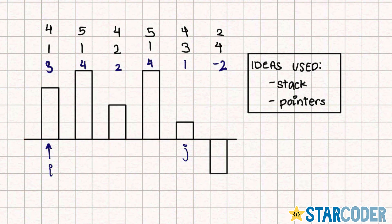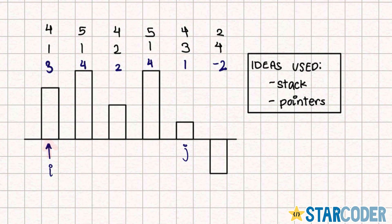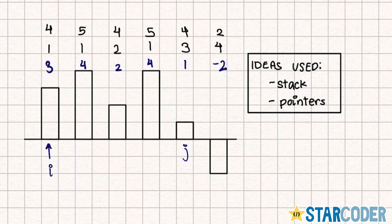Once we've done this, we can use a pointer technique. We assign our starting value i, and after testing a couple of cases — this is one of the most important parts — we can reach an optimal solution by making sure that once we increase something, we don't decrease it. So basically, we're taking a greedy approach.